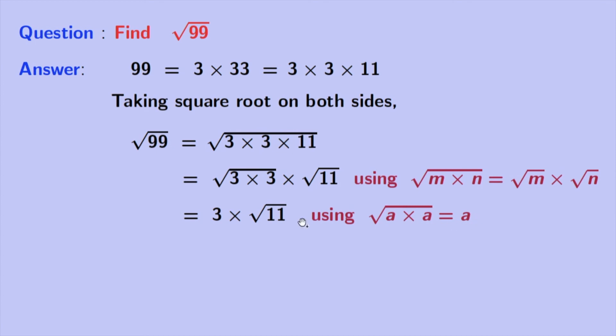Using the rule of square root of a times a is equal to a, here a is 3, so now we have 3 root 11 as our final answer. So thank you for watching.